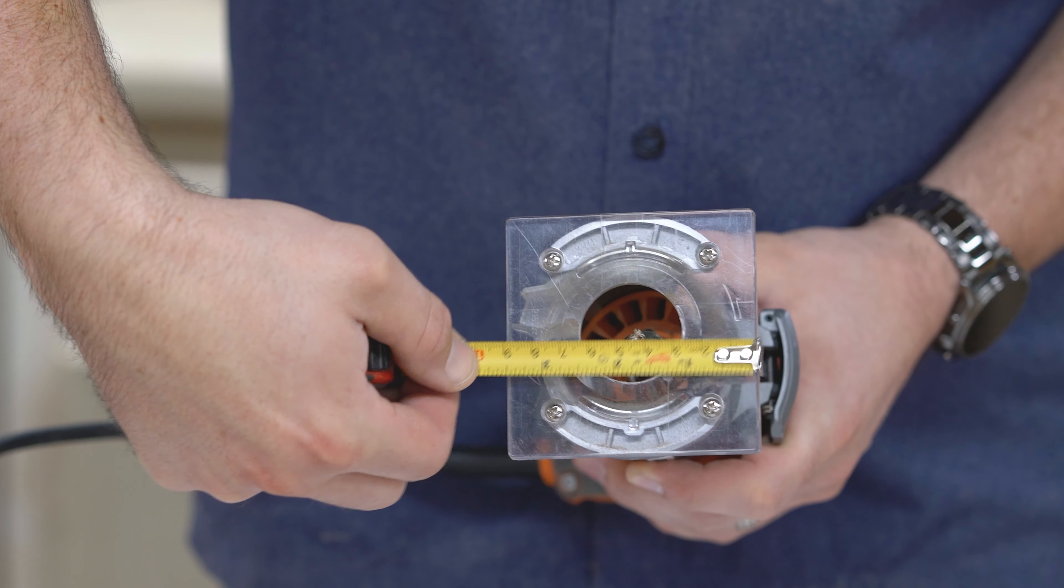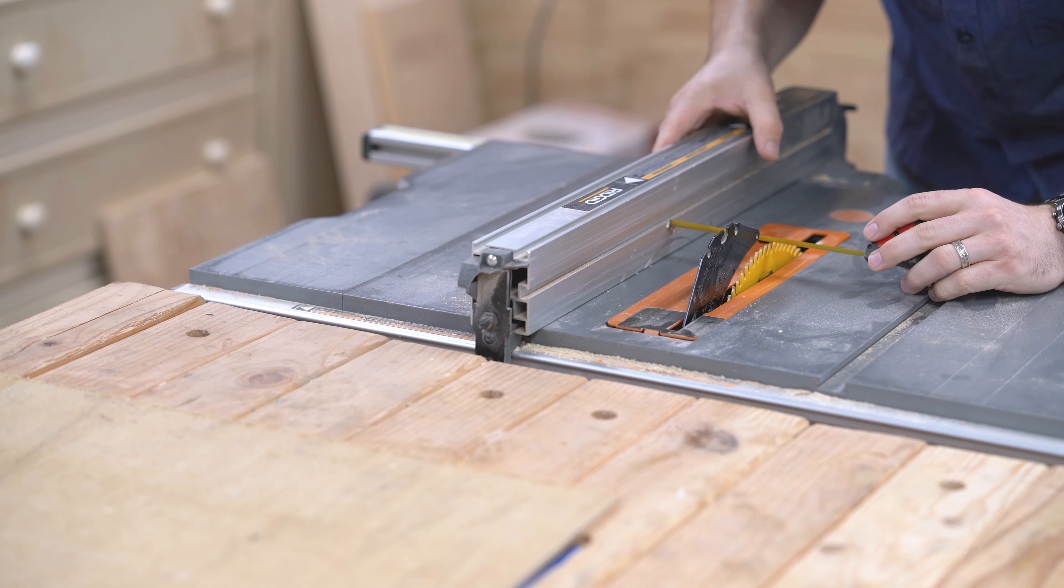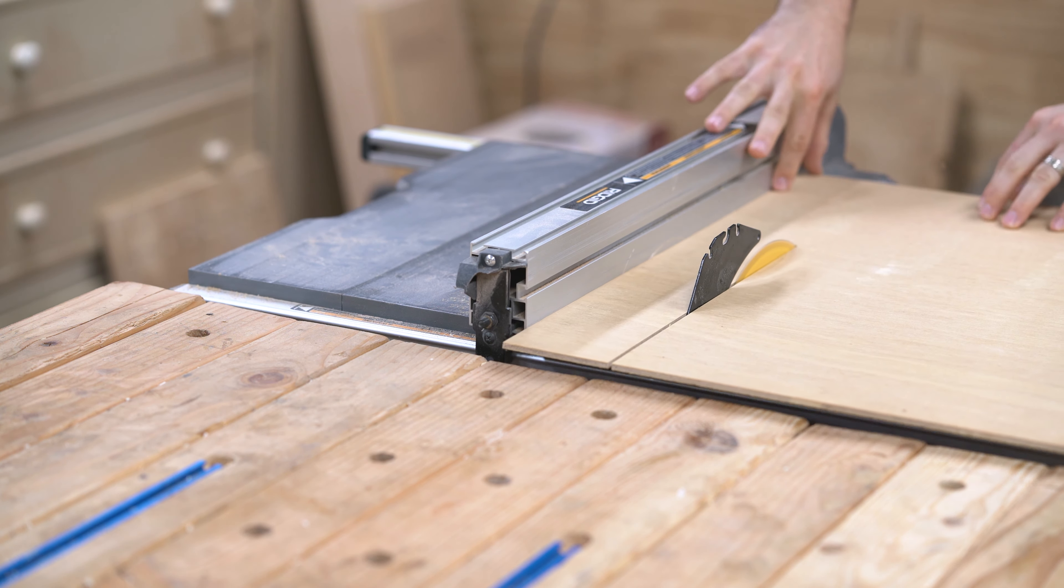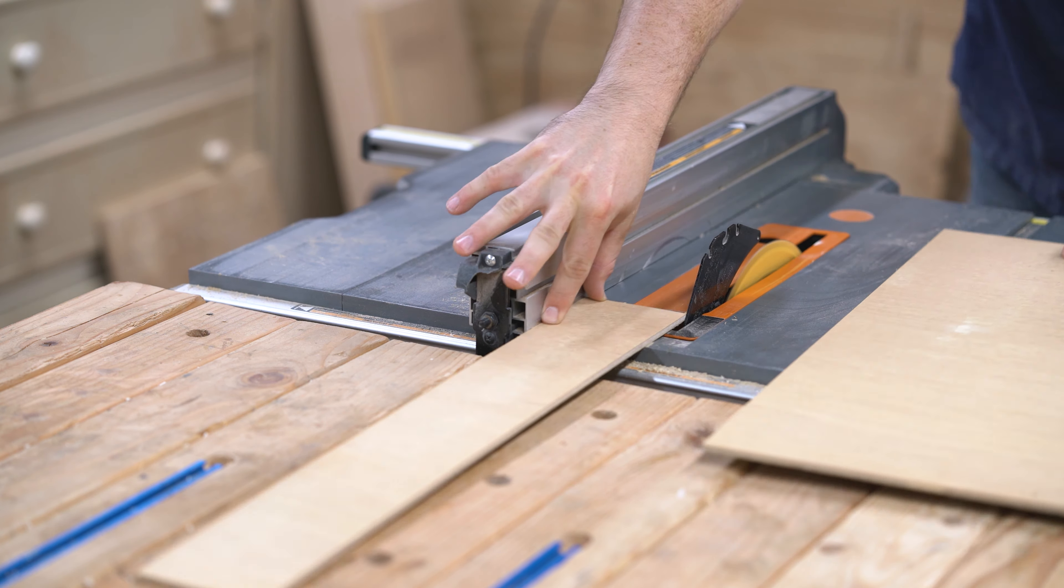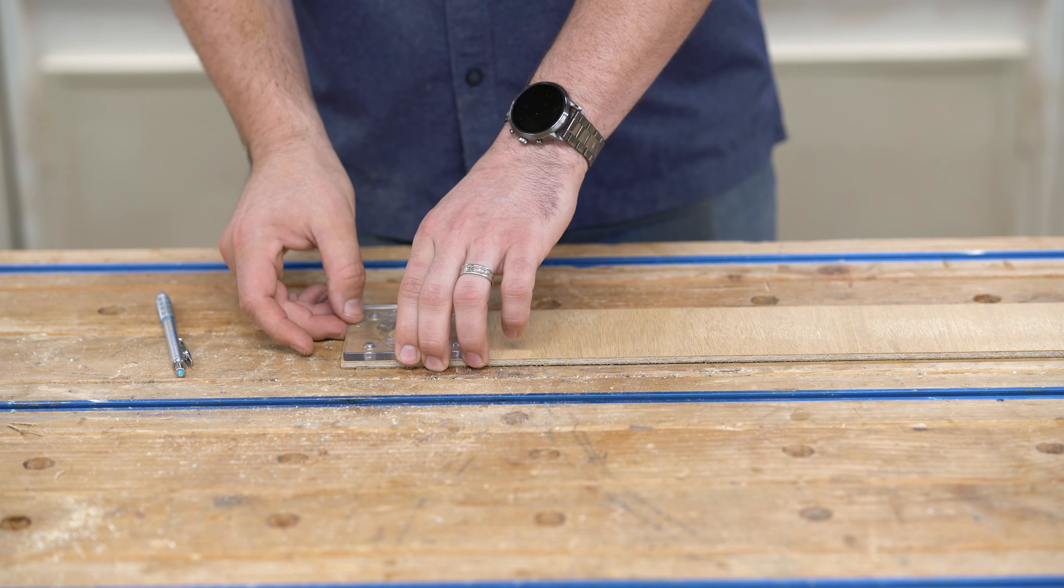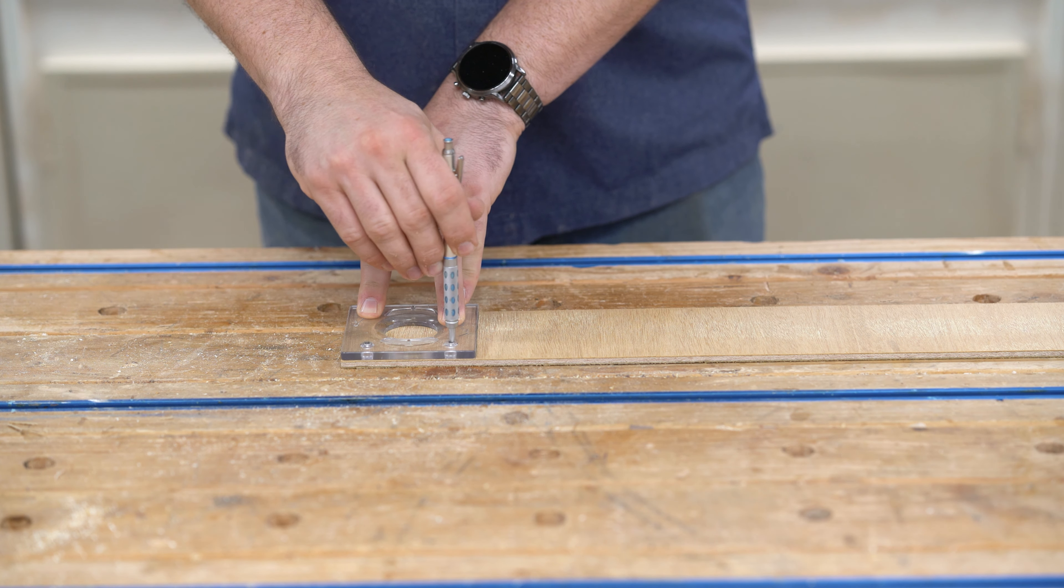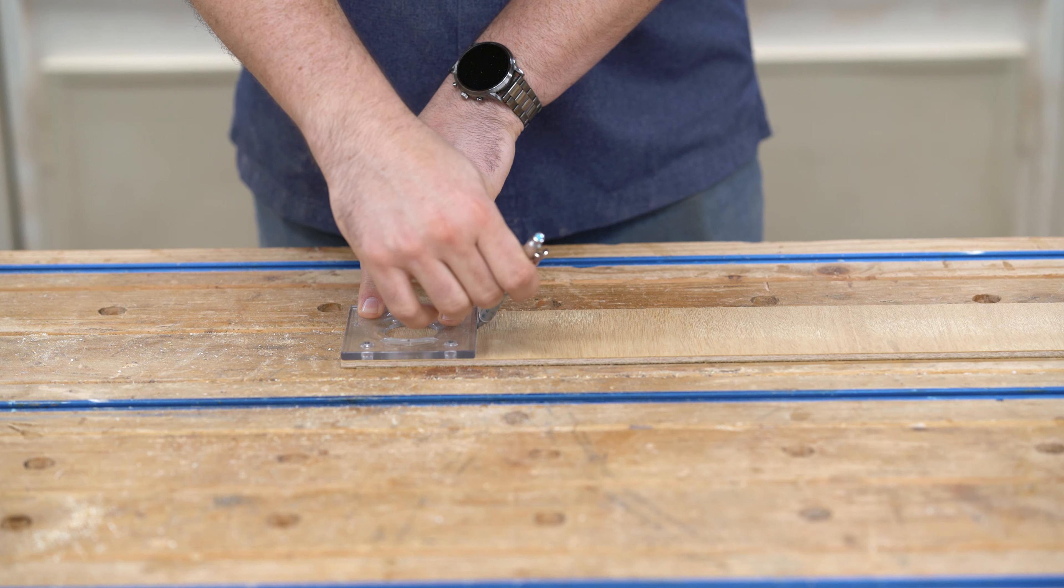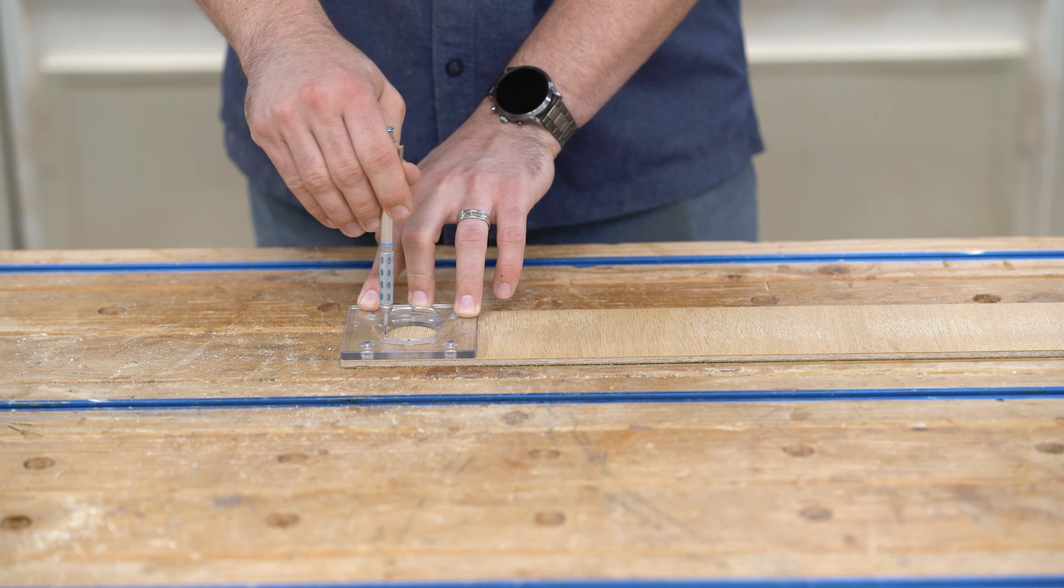I measured the square base plate that came with the router, and it's three and a half inches across. So I'm going to rip this piece of quarter-inch plywood down to that size. Using that square base plate as a template, I'm tracing the holes for the mounting screws. Try to be as flush to the sides as you can. Also, give yourself a reference line for the edge of the plate—we'll need that later.